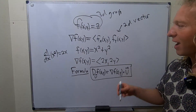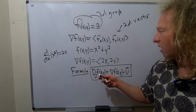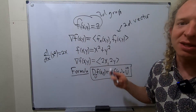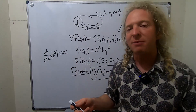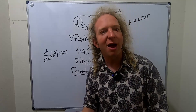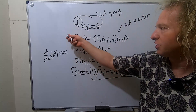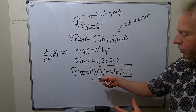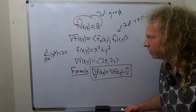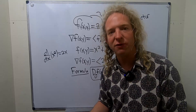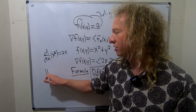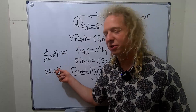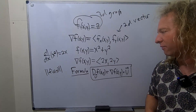The maximum value of the directional derivative is given by the magnitude of the gradient. A lot of times in problems it will say: what is the maximum value of the directional derivative? You just take the magnitude of the gradient. In the videos that follow, you'll see examples of computing directional derivatives and finding the maximum value of the directional derivative — which is just the magnitude of the gradient.